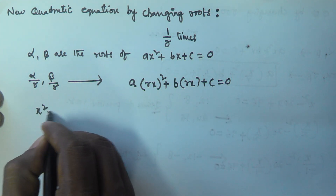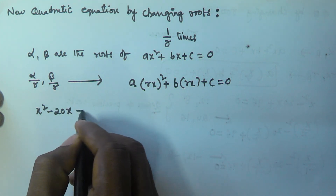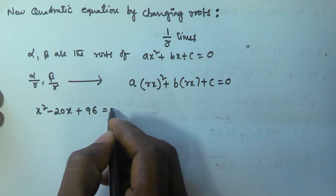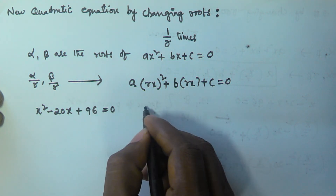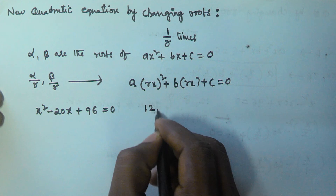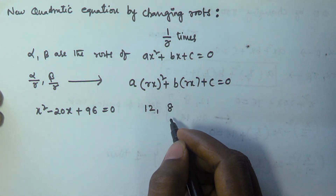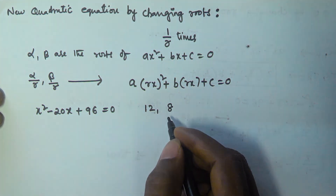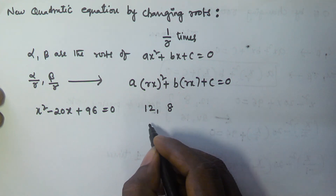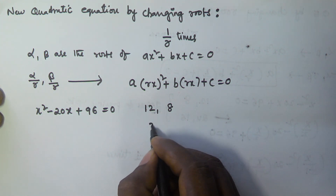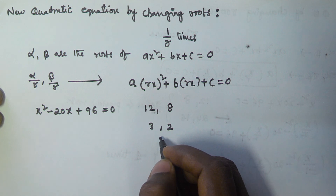For example, if x squared minus 20x plus 96 equals zero is the given quadratic equation with roots 12 and 8, then find the new quadratic equation whose roots are 3 and 2.